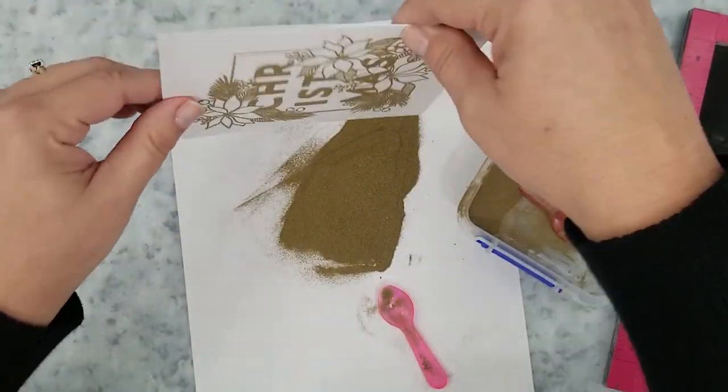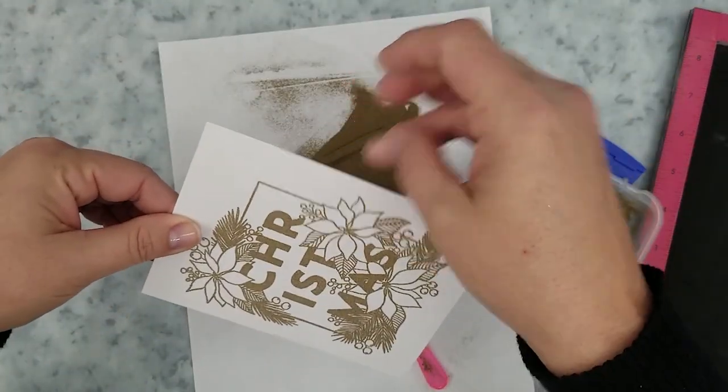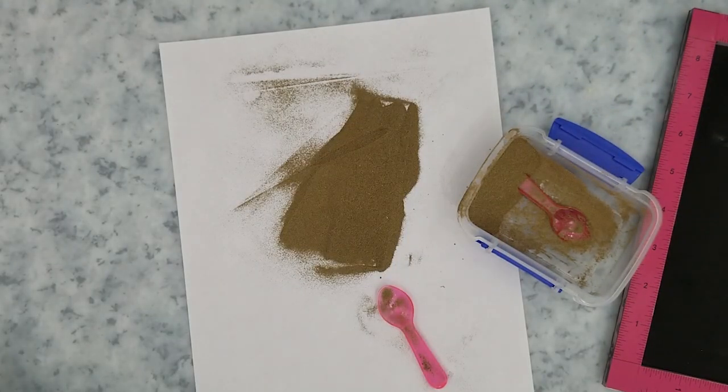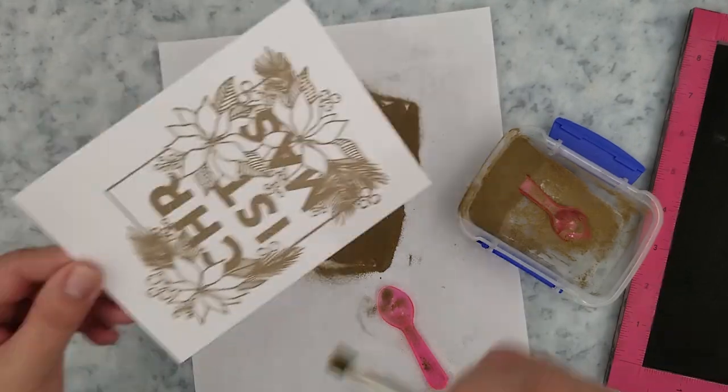I'm adding ultra fine gold embossing powder to my stamped image. I'm gonna lightly tap off any excess, do a little cleanup with a brush, and then we're gonna heat set.